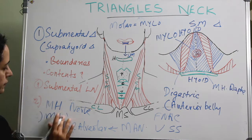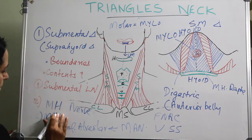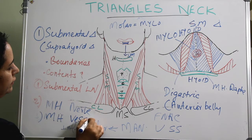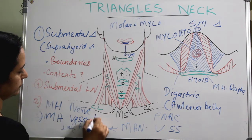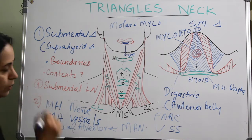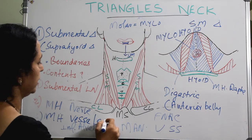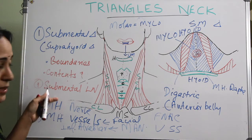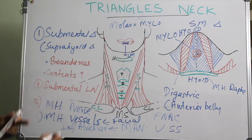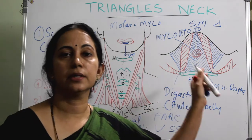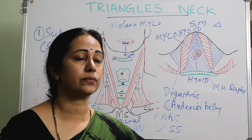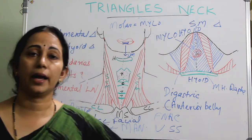The third content is vessels — both artery and vein — which are branches of the facial artery. So the three contents of the submental triangle are: the submental lymph node, the mylohyoid nerve, and the mylohyoid vessels. That makes it a comparatively easier triangle of the anterior neck.